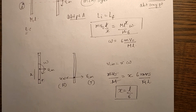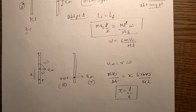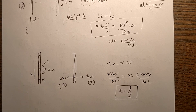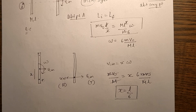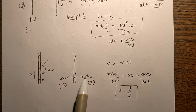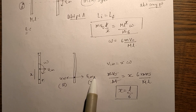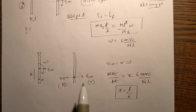Remember: whenever the axis of rotation is not fixed, the motion is complicated. What you do is understand the motion as a combination of translation and rotation, apply all the concepts of translation and rotation separately, and then combine them. The velocity of any point is the vector sum of velocity due to translation and velocity due to rotation.